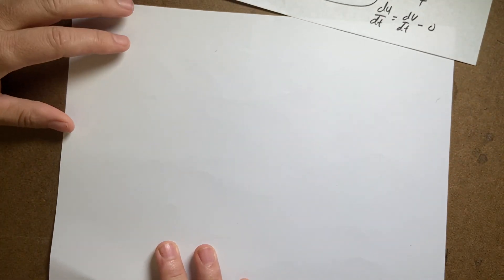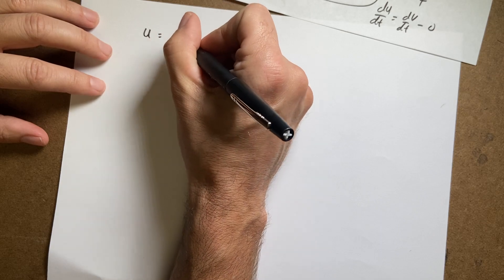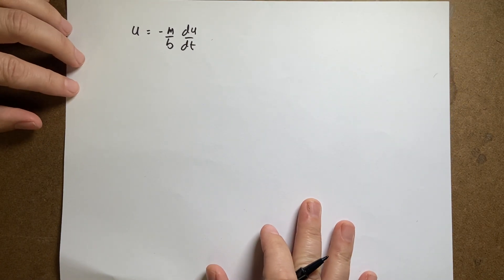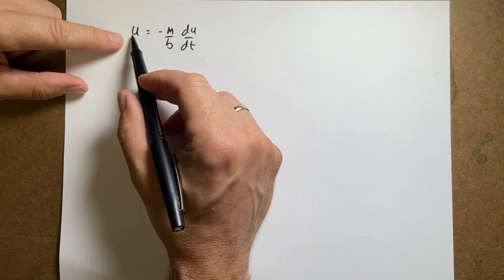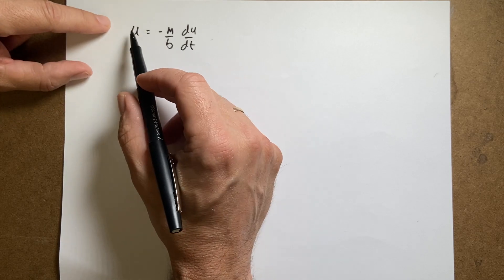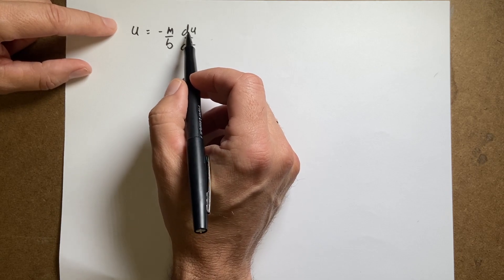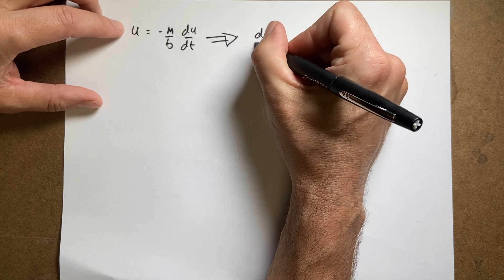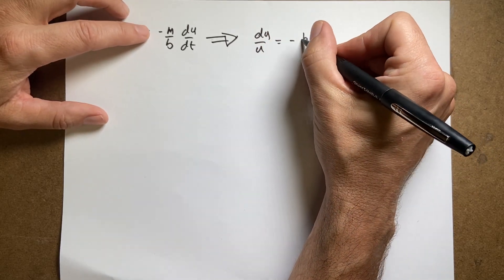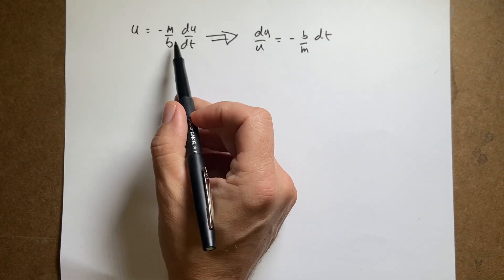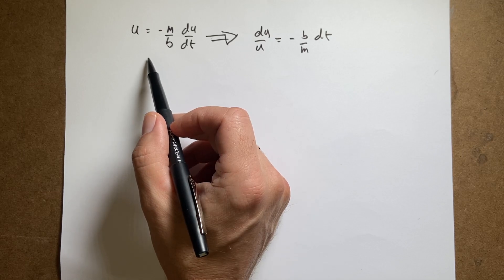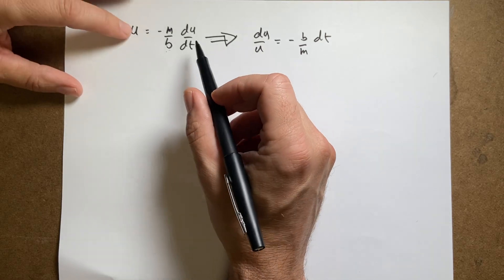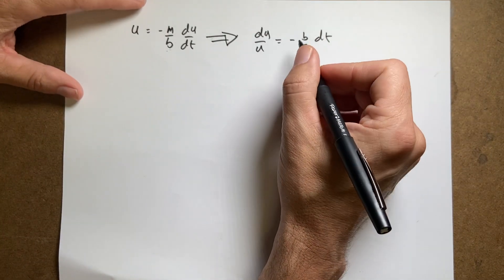So how do you solve that equation? Let's write it again: U equals negative (m/B) dU/dt. I'm going to make this variable-separable, getting the dt's on one side and the U's on the other side. I'll divide both sides by U and multiply both sides by the dt term. Skipping a step, I get: dU/U equals negative (B/m) dt.